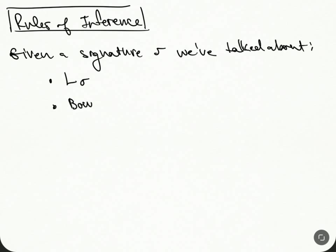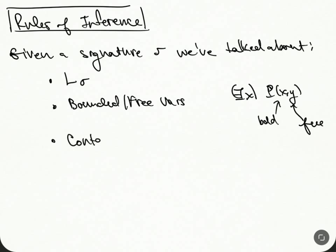This one's bounded, this one's free. We've talked about contexts, so variables that - context for this would be like y. And then we've also talked about the symbol here for theories, this deduction symbol.